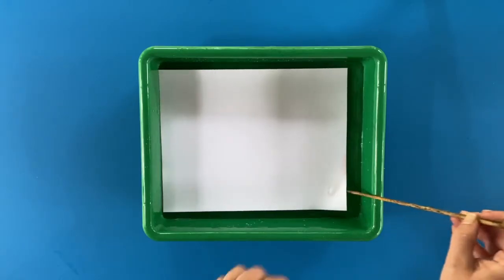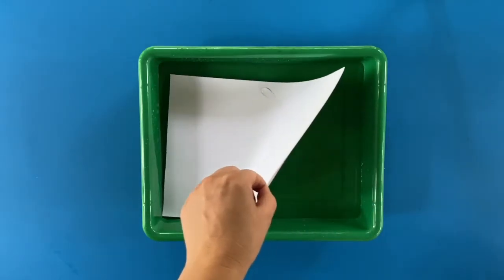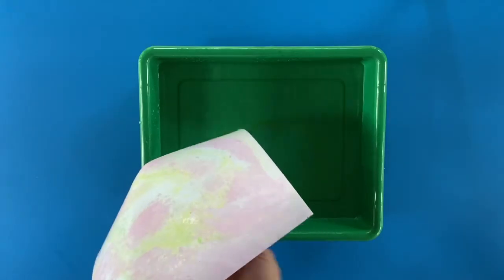If you have a skewer or toothpick or other tool, you can gently lift the corner of your paper and remove it from the water. Lay flat to dry.